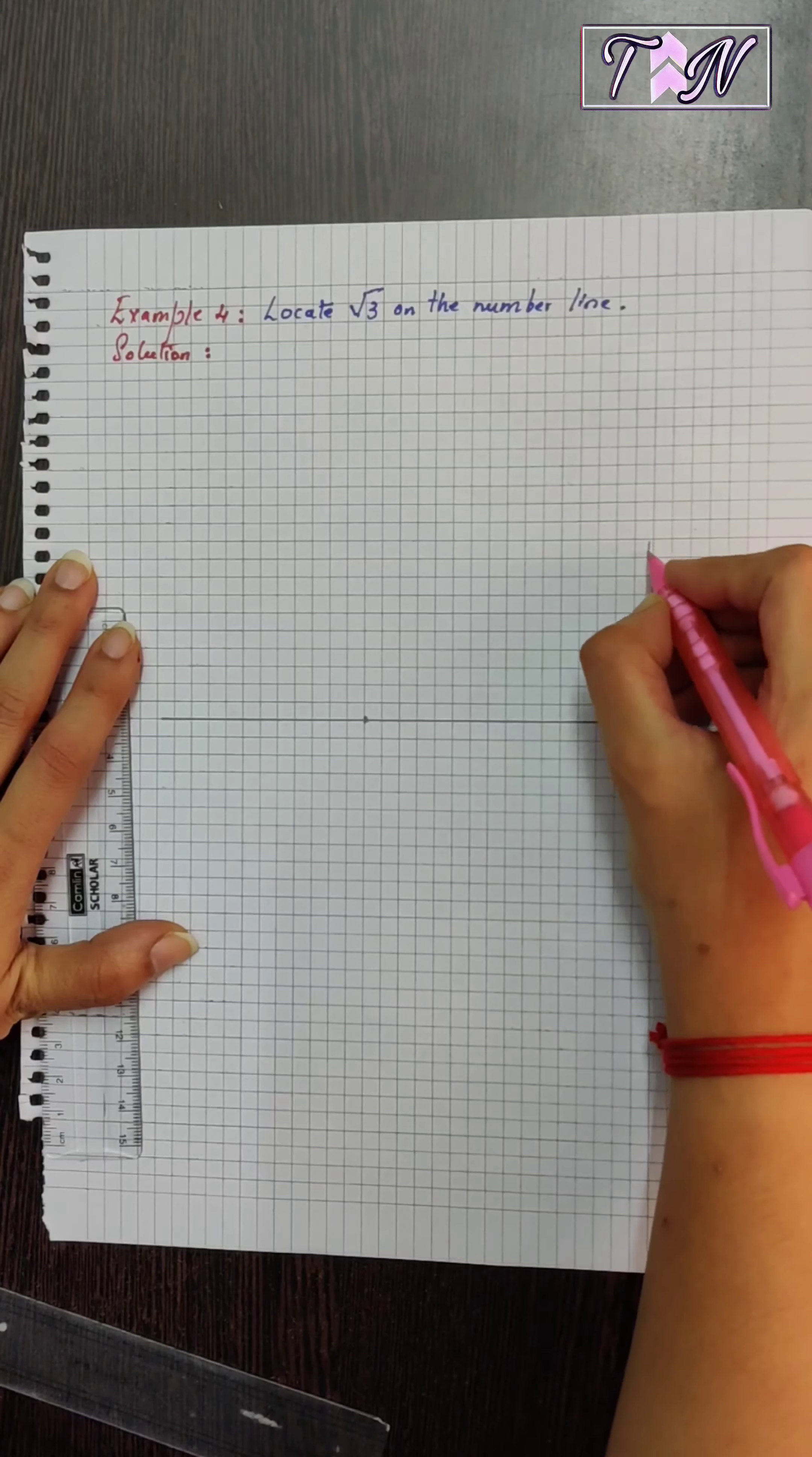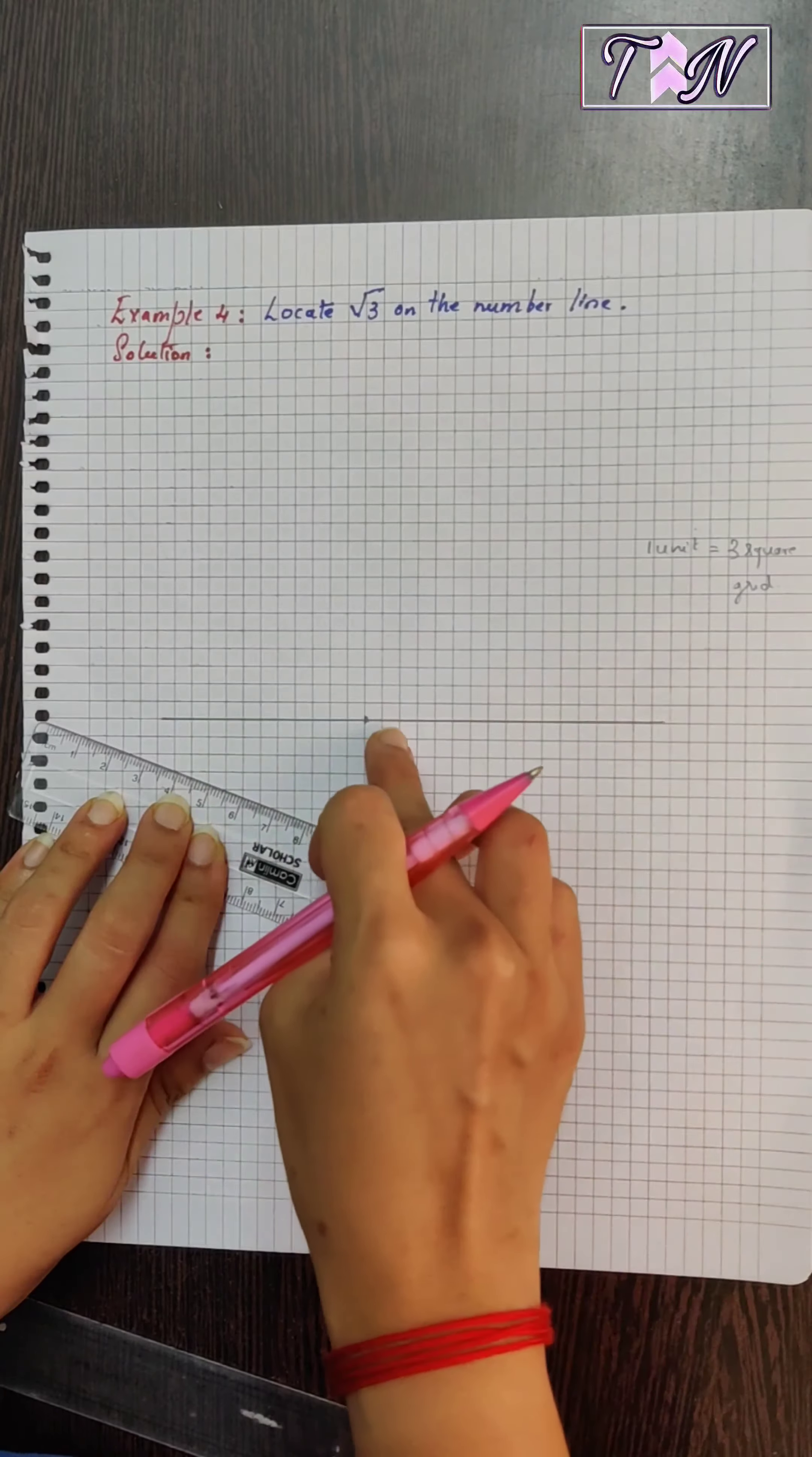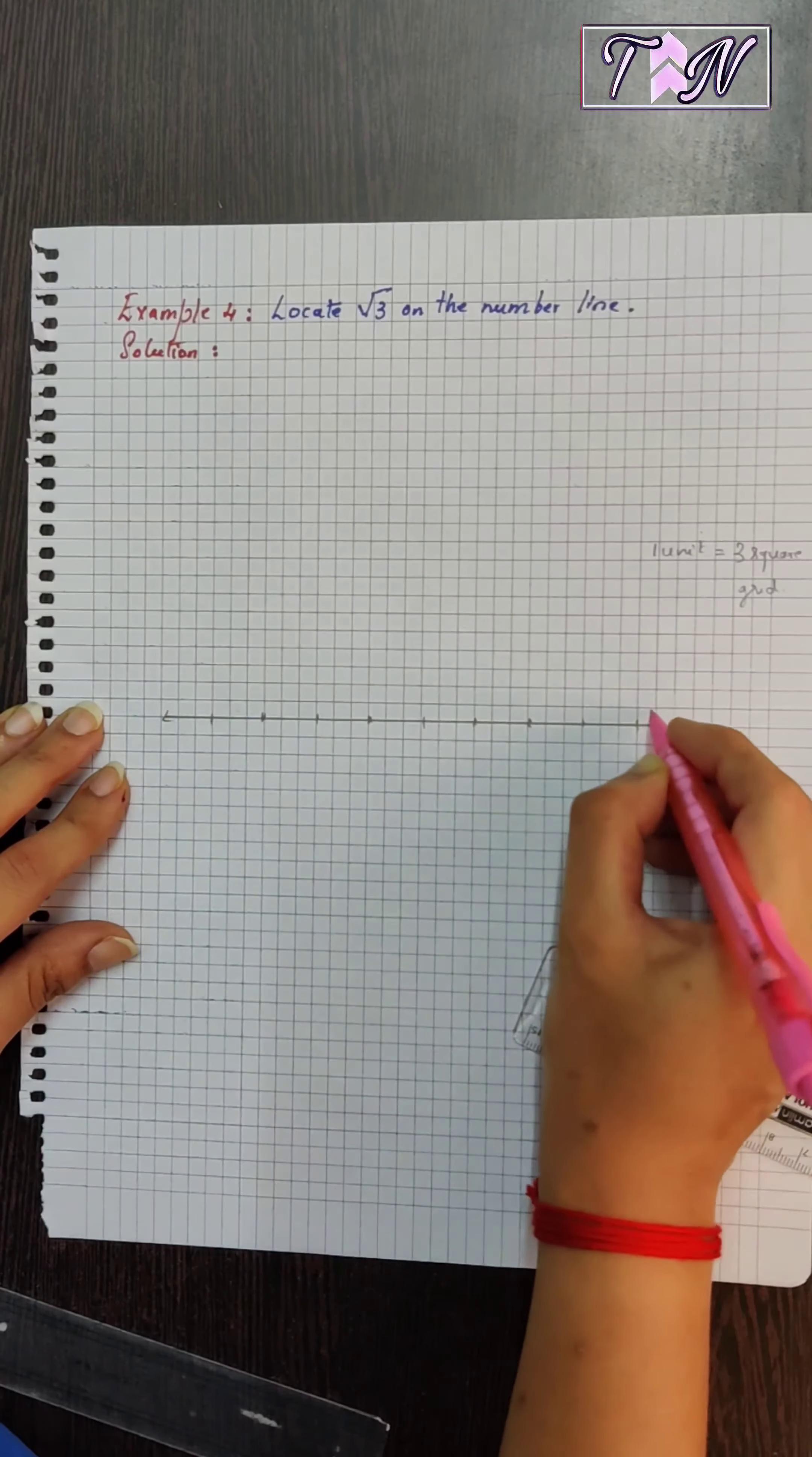I will take the scale as 1 unit equal to 3 square grids here. You can take 1 unit as 1 cm on the scale when you are drawing, but why am I taking 3 square grids? It's because it's clearly visible for the video, for you to understand. So, I will mark every 3 square grid as 1 unit.